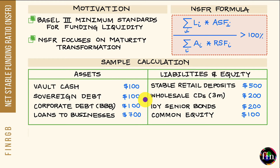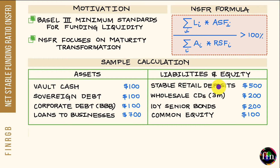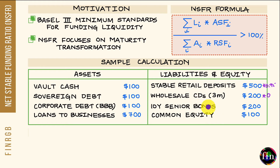Let's apply this formula to a simple balance sheet of a depository institution, focusing first on the right-hand side — liabilities and equity — to calculate Available Stable Funding. Stable retail deposits are quite stable and sticky, so their ASF is 95%, multiplied by the deposit amount. Wholesale certificates of deposit, which are short-term three-month CDs, tend to be quite fickle and unstable, so their ASF is 0.